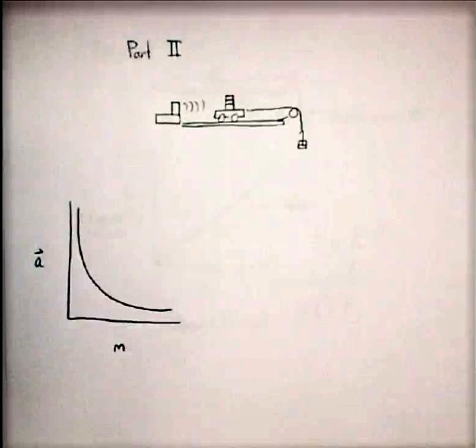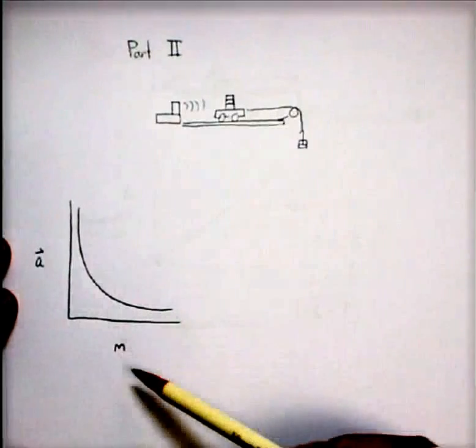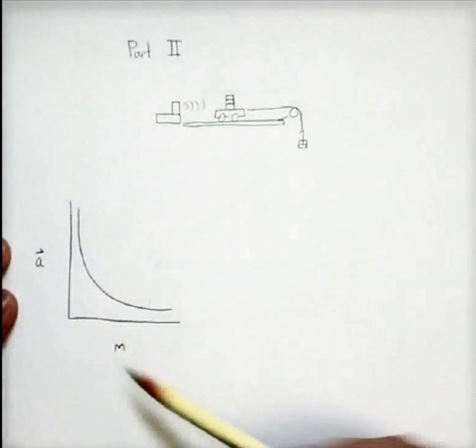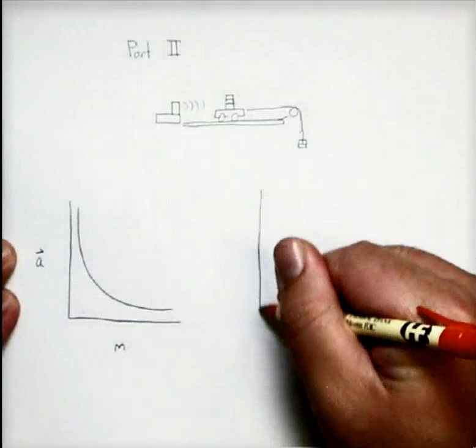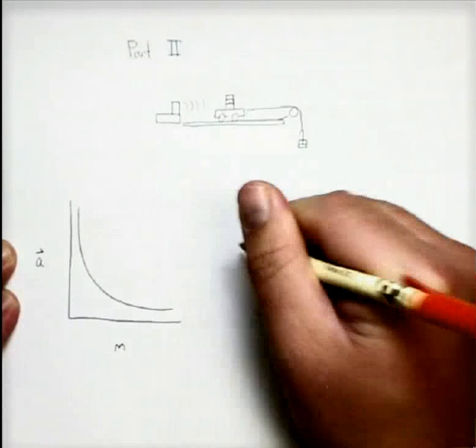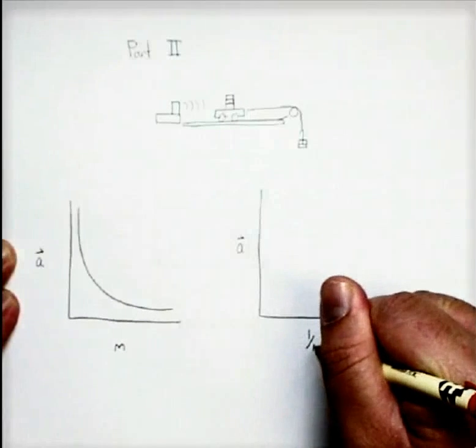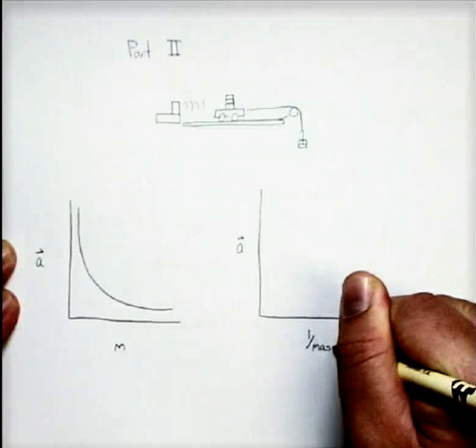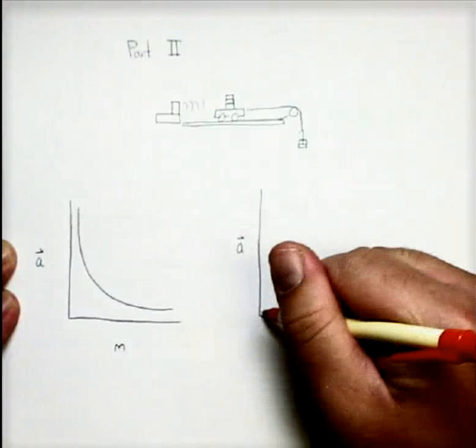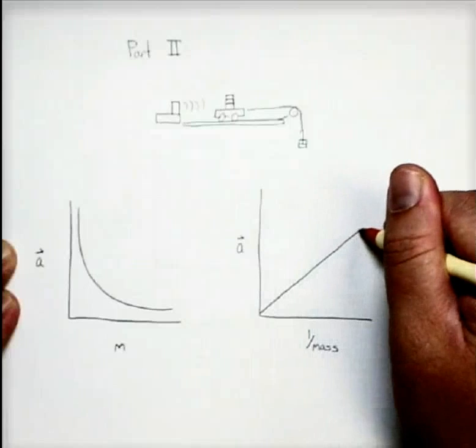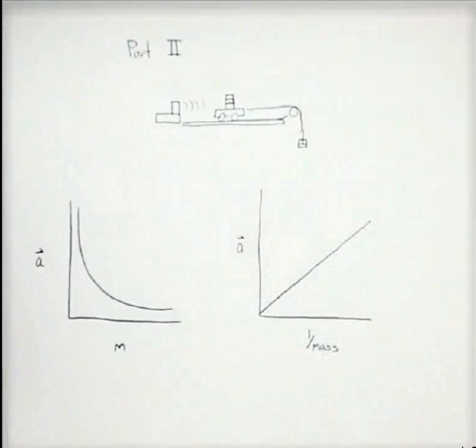which at first glance doesn't really seem to tell us much of anything. And then, if we were to change this, if we were to take, instead of plotting acceleration versus mass, we plot acceleration versus the reciprocal of mass, 1 divided by mass, all of the sudden, this becomes a straight line.